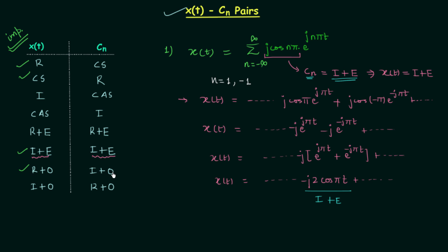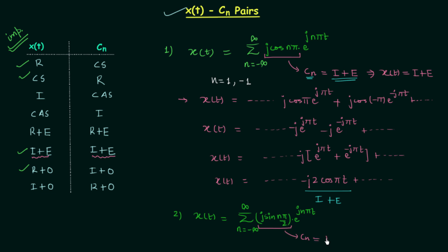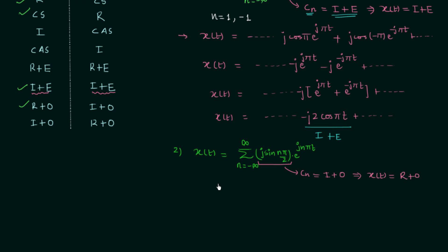Now we will move to the proof of the next xt-cn pair. In this example, xt is equal to summation from n equal to minus infinity to infinity of j·sin(nπ/2) multiplied by e^(jnπt). Comparing with the standard complex exponential Fourier series, cn equals j·sin(nπ/2). It is clear that cn is imaginary as well as odd because the sine function is odd. From the xt-cn pair we know that when cn is imaginary and odd, xt is going to be real and odd.